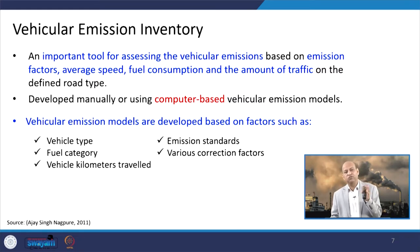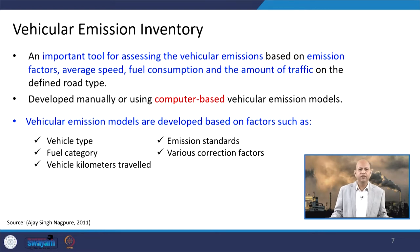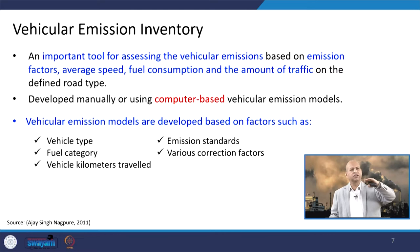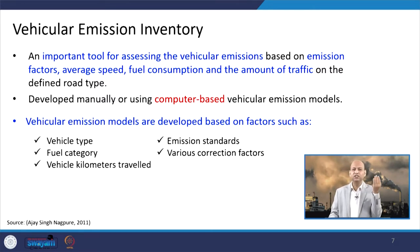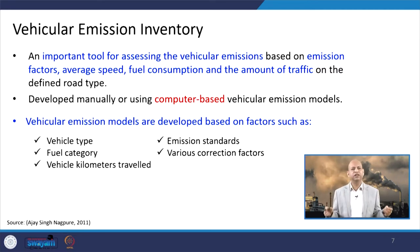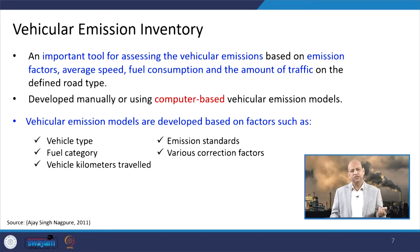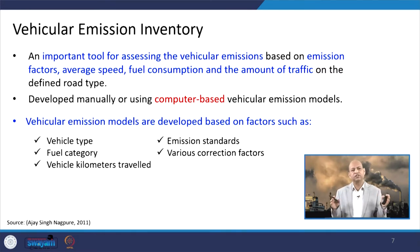Then emission standards — whether they are followed or not — fuel category whether it is diesel, petrol, CNG, LPG, or ethanol. Various correction factors are needed because the same vehicle running on a flat road in Delhi will emit differently when taken to Dehradun or a hilly area, because pressure, humidity, and temperature change — every meteorological or atmospheric parameter influences the fuel combustion activity. Then vehicle kilometre travelled: some vehicles run hundreds of kilometres, so their emissions will be more. And in developed countries, the driving cycle is also taken into account.